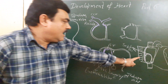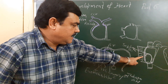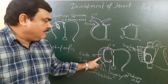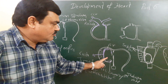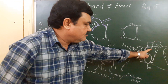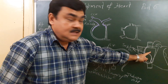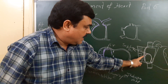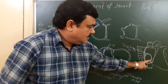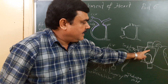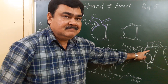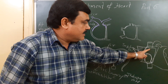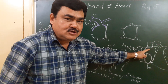The fossa ovalis is present here, and the foramen ovale is present during embryonic life and closes with adulthood. The rough part of the right atrium is formed by the primitive atrium, while the smooth part is formed by absorption of the sinus venosus.